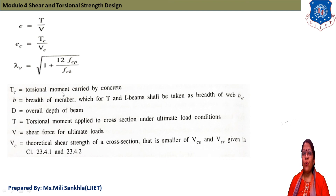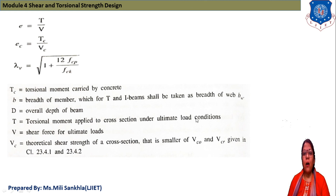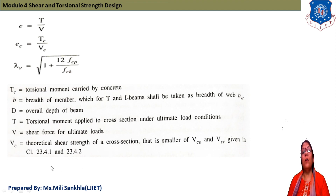Where TC is the torsion moment carried by concrete, B is the width of the member, D is the overall depth of the beam, T is the torsion moment applied to the cross-section under ultimate load conditions, V is the shear force, and VC is the theoretical shear strength of the cross-section, similar to VCO and VCR given in Clauses 23.4.1 and 23.4.2.